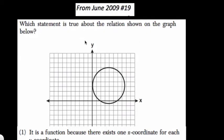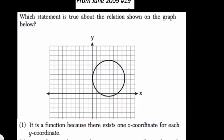Okay, so here they say, which statement is true about the relation shown on the graph below? Now, when they say relation shown on the graph, they're talking about this circle. That circle is a relationship. It could be a function, it might not, and it's the one that's drawn on this graph. So we're trying to pick a statement that represents what we're finding here.